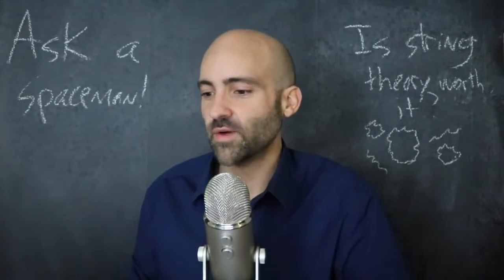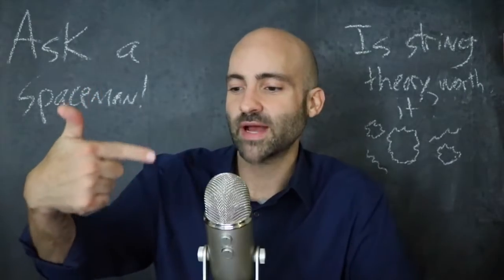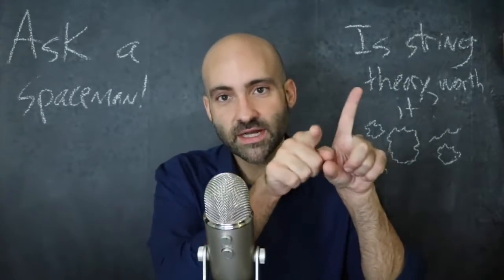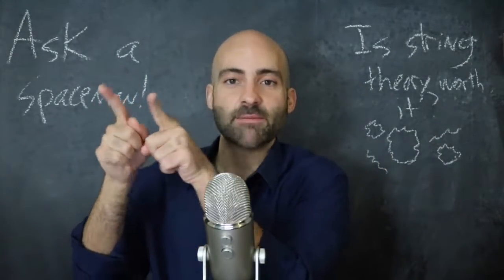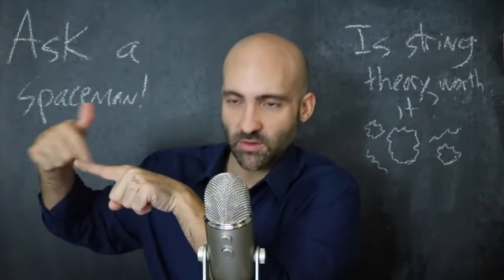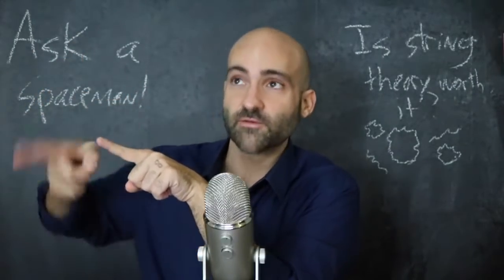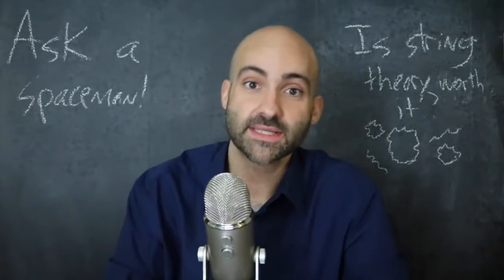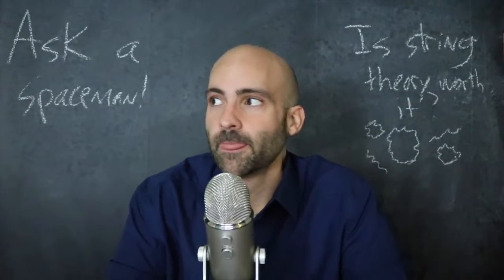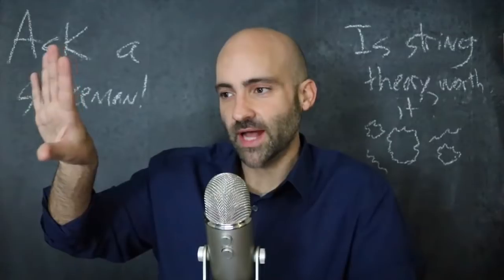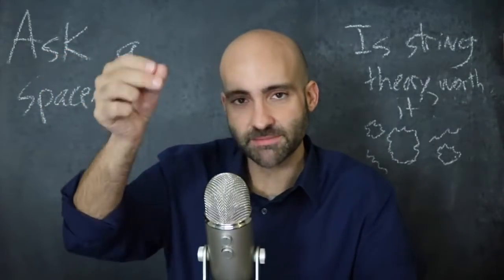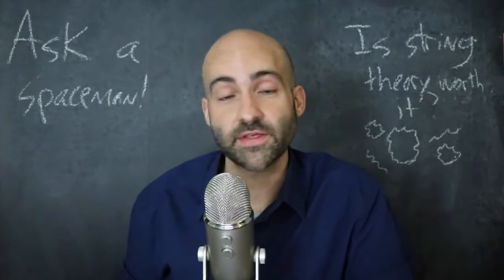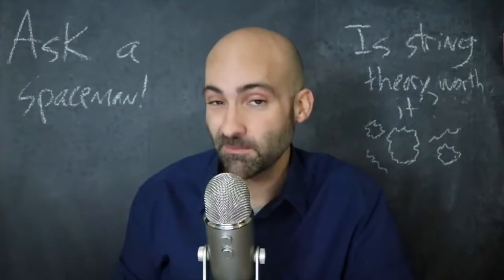There's another duality involving strings wrapping around dimensions. A theory with strings wrapping in one direction while free in another can be mapped to another theory where the strings are free in the wrapped dimension and wrap in the free dimension — you just swap those out and you get the other theory. And some dualities don't map to any of the five theories at all; they go somewhere new, and we think that might be scratching the surface of M-theory.